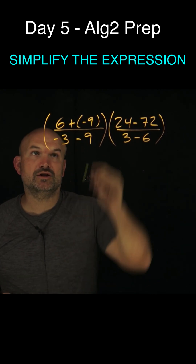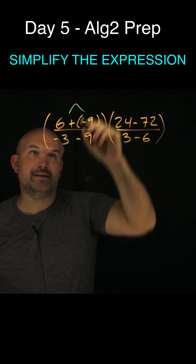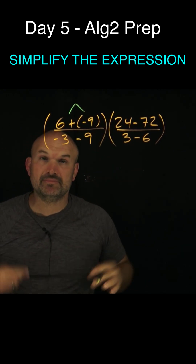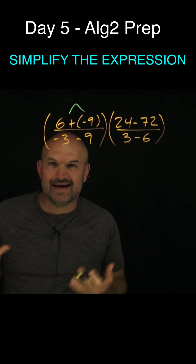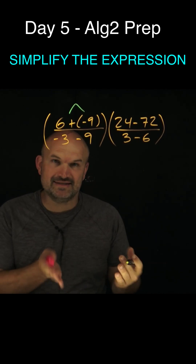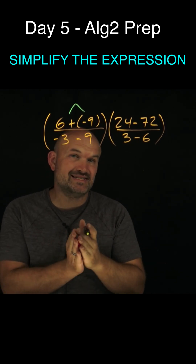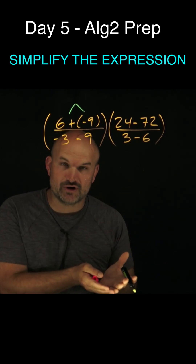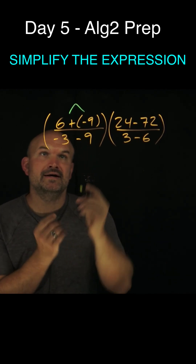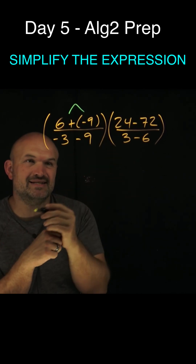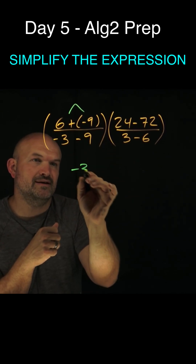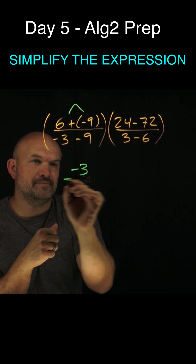Let's take a look at the top. We have six plus a negative three — and a plus with a minus, ladies and gentlemen, is the same thing as subtraction. So you can think of this as just six minus nine, which is going to be a negative three.